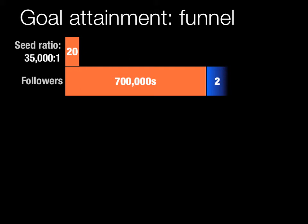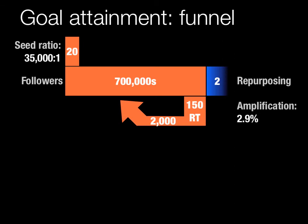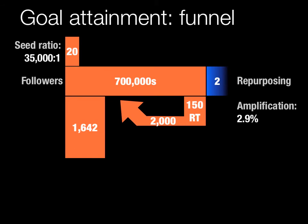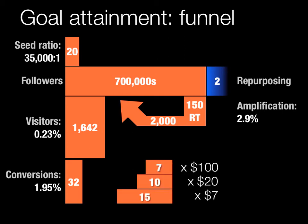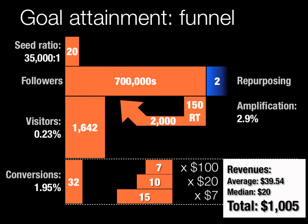We had about 20 people as initial seeders of the message. Those people have a substantial number of followers, giving us a ratio of followers to seeders — a way of quantifying how broadly distributed the message will be from your initial group. The message was propagated into two other networks: a blog and an online media site — a form of repurposing. The campaign was retweeted by about 150 people to around 2,000 new followers, an amplification ratio of about 2.9%. About 1,600 visited the actual site — a 0.23% click-through rate from initial impressions. 32 of those people gave money — about a 2% conversion rate — with tiers of donation allowing us to calculate total revenues and outcomes. This kind of quantifiable data is something community managers are struggling to provide the business. This is a great example of how to quantify Communalytics so we can stop focusing on group hugs and start focusing on counting hugs.